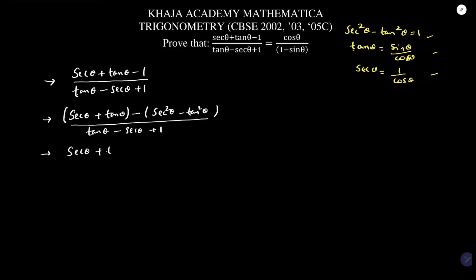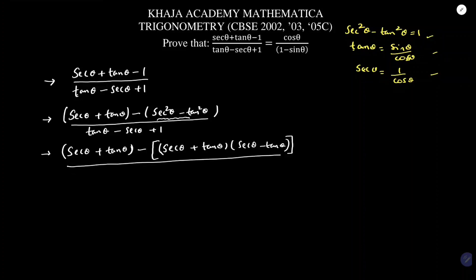In the numerator we have sec θ + tan θ, and for the part sec²θ - tan²θ, I will write it as (sec θ + tan θ)(sec θ - tan θ) using the identity a² - b² = (a+b)(a-b). The denominator remains tan θ - sec θ + 1.